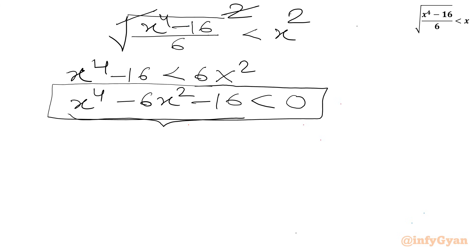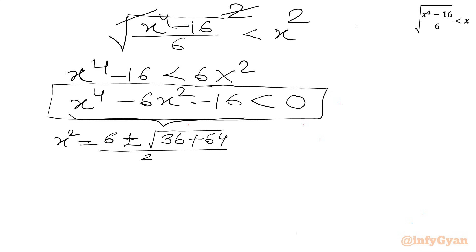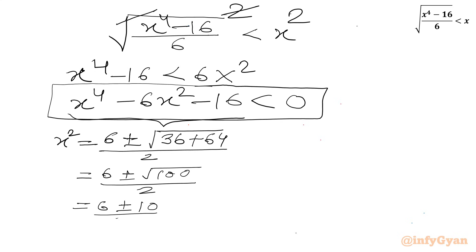This is a quadratic equation in x². Using the quadratic formula, x² = (6 ± √(36 + 64)) / 2 = (6 ± √100) / 2 = (6 ± 10) / 2. This gives x² = 16/2 = 8, or x² = -4/2 = -2.